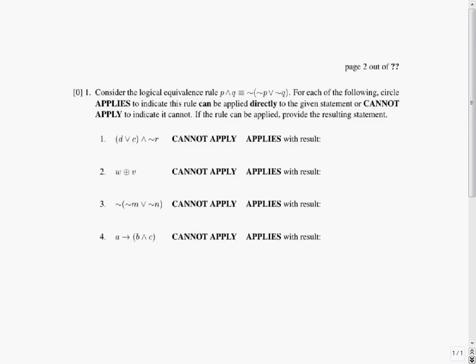Consider the logical equivalence rule P and Q is equivalent to not (not P or not Q). For each of the following, circle applies to indicate this rule can be applied directly to the given statement or cannot apply to indicate it cannot. If the rule can be applied, provide the resulting statement.